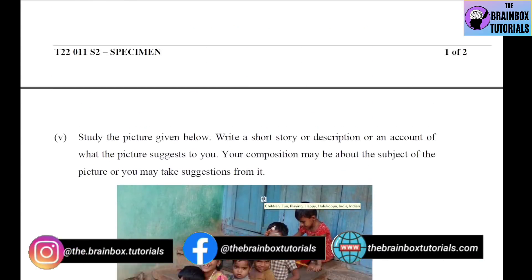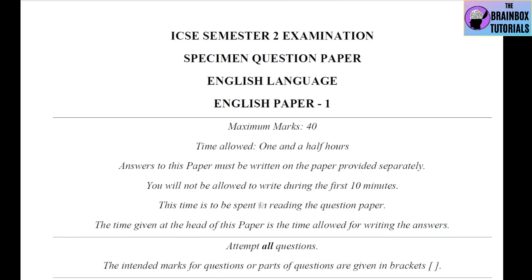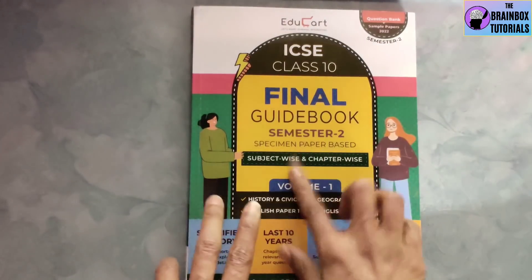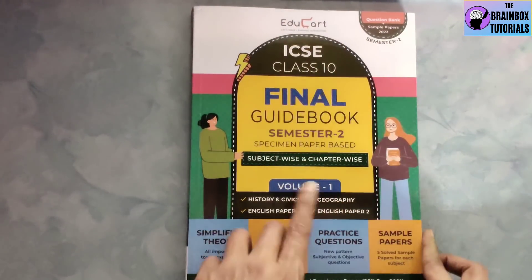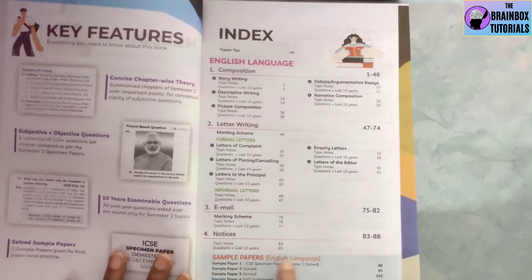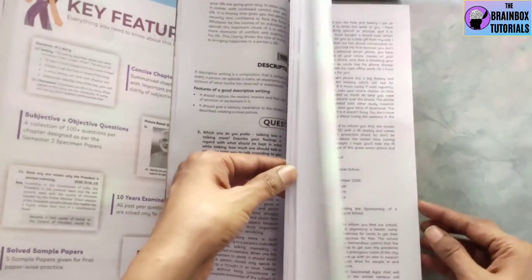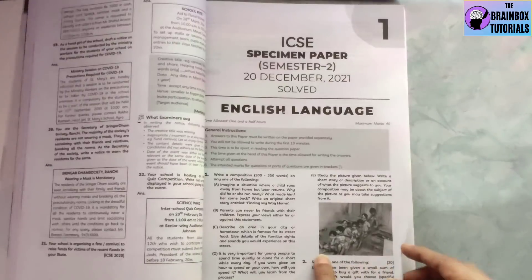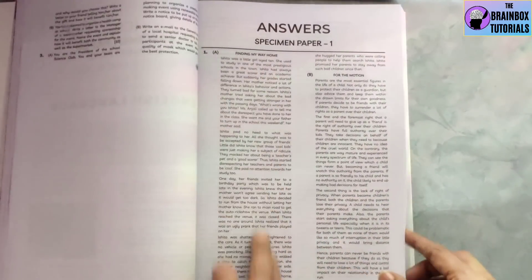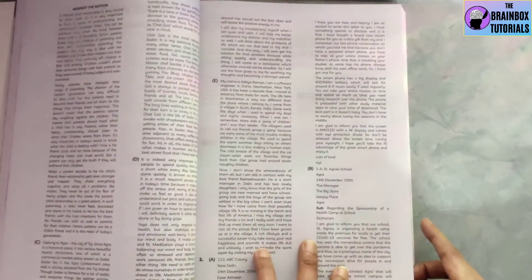If you want to see the answers to all these questions in this paper, you can purchase the Educard book volume 1 where you will get the solution to this particular specimen question. As I mentioned, in this book — Educard final guidebook volume 1 — the English Language ICSE specimen paper Semester 2 is solved. The same question paper with the same picture composition is there on page 89, with answers written in proper format and proper grammar.